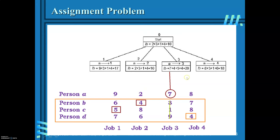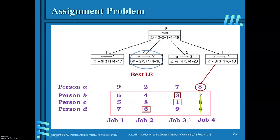Similarly, when person A is assigned with job 3, fixing job 3 for person A and excluding the third column, the minimum values are 4, 5, and 4. When person A is assigned with job 4, the total lower bound value is 80. We have now found the lower bound for all possible assignments of A. The best possible lower bound is 10, so we branch from the node where A is assigned with job 2.